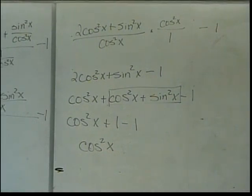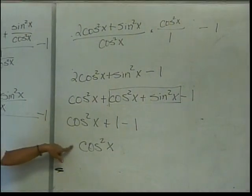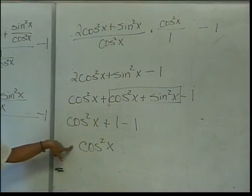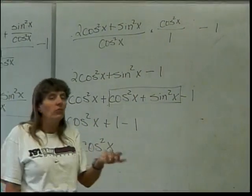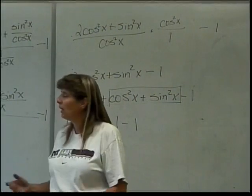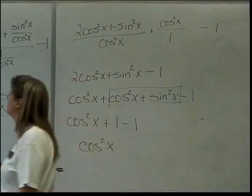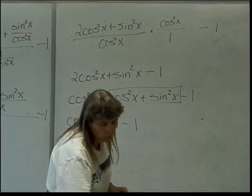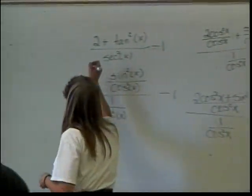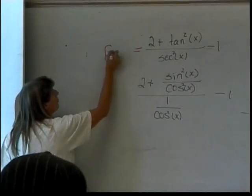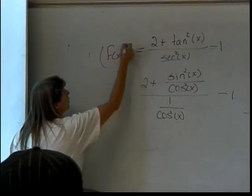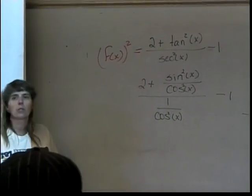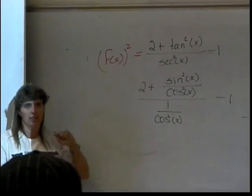It went from looking like a big mess to something that's not so bad. That's the way most of your trig identities will work. Now, how would this look in WebWork? Well, in WebWork, the chances are it would have had a sign that looks like this and then it would have said this equals f of x squared.